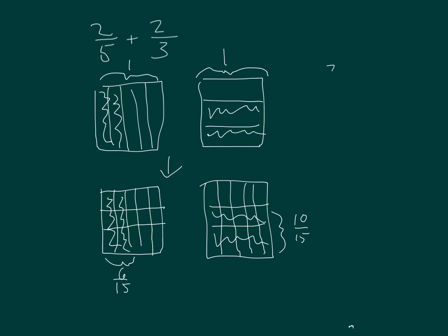So two fifths plus two thirds is the same as six fifteenths plus ten fifteenths, which is equal to sixteen fifteenths, which is more than one. Fifteen fifteenths plus one fifteenth, which equals one and one fifteenth.